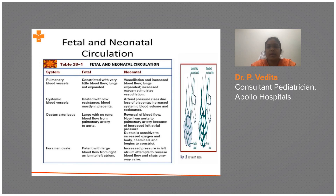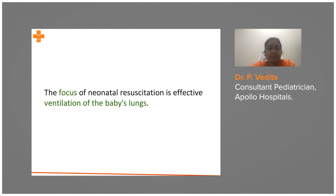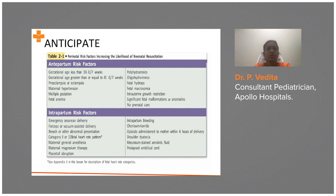In utero, the baby's oxygen saturation is around 60%. Postnatally, it gradually approaches 100%. The ductus arteriosus closes and the foramen ovale closes as explained. The focus of neonatal resuscitation is ventilation of the baby's lungs.